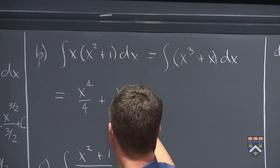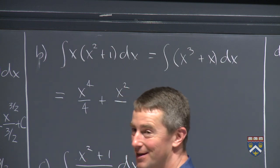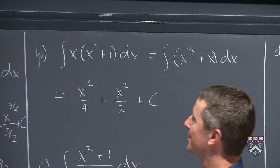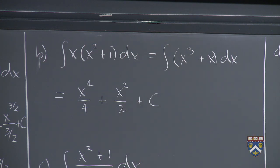x cubed becomes x to the fourth over 4. x becomes x squared over 2. And then again, let's not forget that plus c to get the entire infinite family of correct antiderivatives.